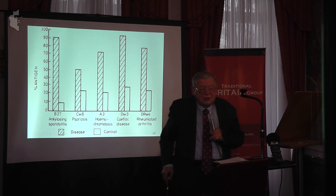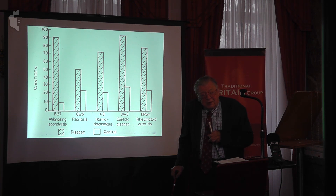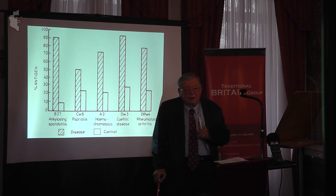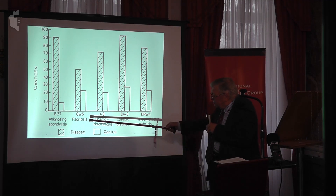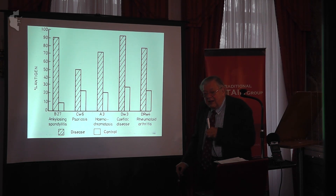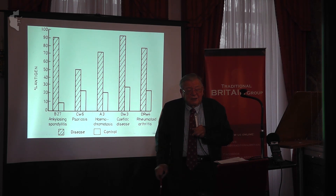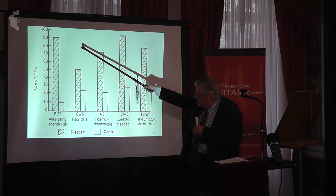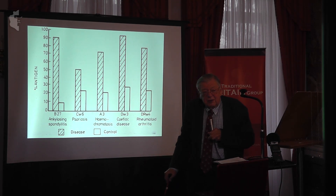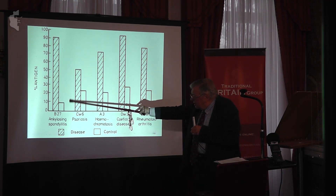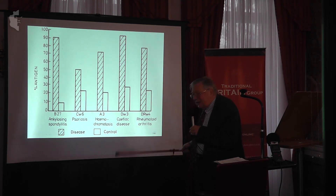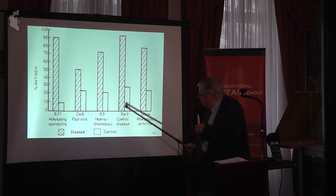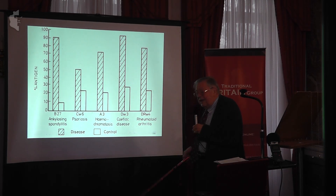One of the reasons the Wellcome Trust supported us was not just to find out about populations, but because what you find out has relevance to genetic dispositions to different diseases. Early work with the HLA system showed that ankylosing spondylitis — an aggravating form of rheumatism where your vertebrae stick together — nearly all sufferers have type B27, which can now be used to help diagnosis, whereas in the normal population there's hardly any. Psoriasis, a skin disease, is also associated with this type, as is celiac disease (gluten sensitivity) and rheumatoid arthritis.